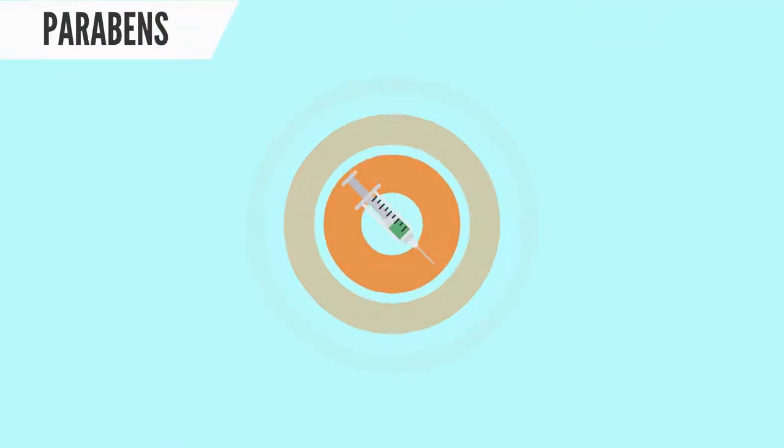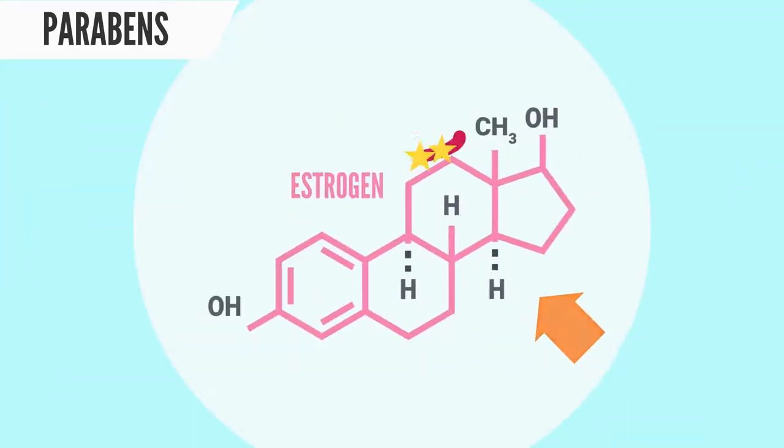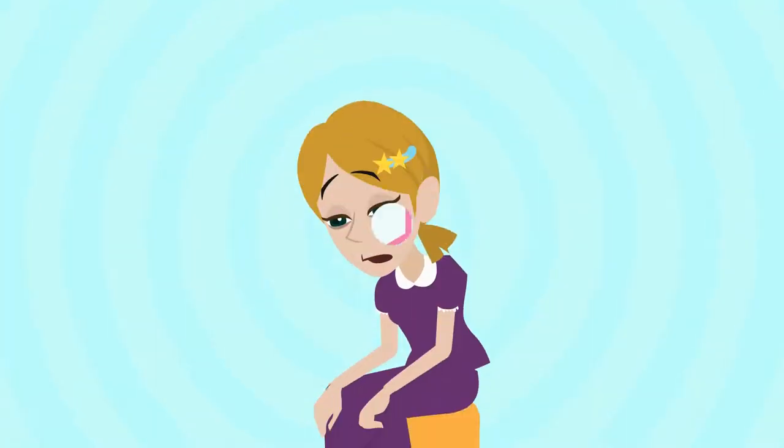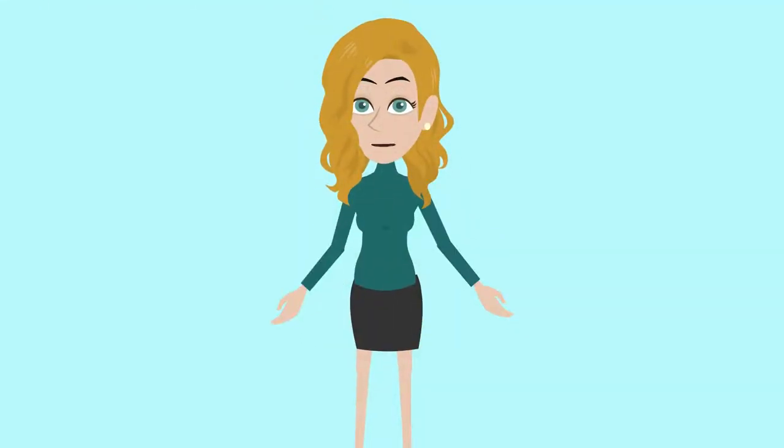Parabens are preservatives that prevent mold and bacteria from growing on the deodorant stick. However, they can mimic estrogen and mess your hormones up. They're already all over the place when you're pregnant. Do you really need this hassle on top of all the other hormonal issues you've got going on?